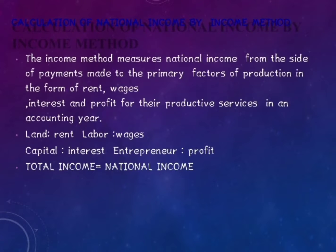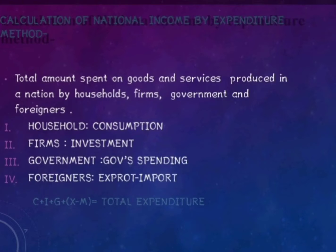...interest, and profit for their productive services in an accounting year. The factors are: Land earning rent, Labor earning wages, Capital earning interest, and Enterprise earning profit. Total Income is equal to National Income.